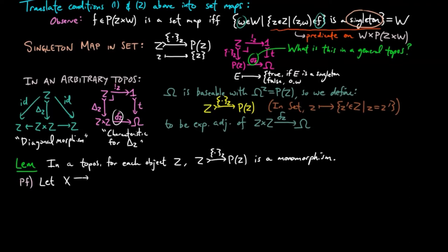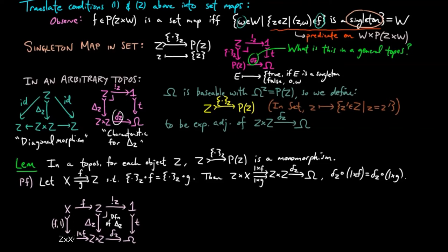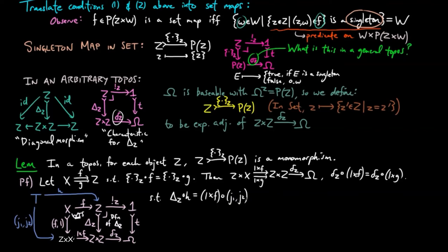For the proof, we assume there are morphisms f and g from x to z such that post-composition by the singleton morphism gives equality. Thus by taking the exponential adjoint we have delta sub z composed with one cross f equal to delta sub z composed with one cross g. Consider the following diagram. The right-hand square is a pullback by definition of the diagonal morphism. The left-hand square commutes since the high road and low road both equal the morphism (f, f) from x to z cross z. Assuming morphisms h and (j1, j2) with delta sub z h equal to (1 cross f)(j1, j2), we get j1 equals h equals f(j2), so j2 is the unique factorization showing the left-hand square is also a pullback.